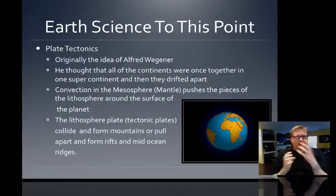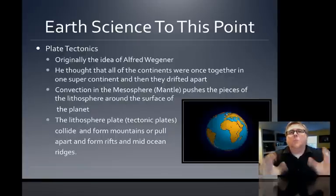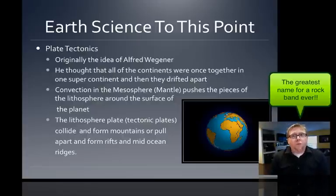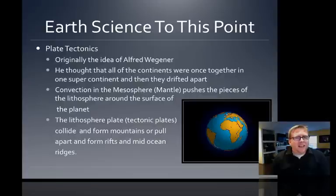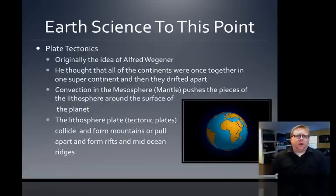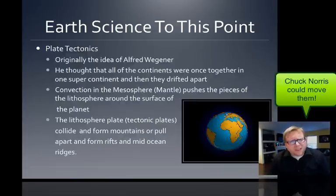Let's start with plate tectonics — in class I've always said this is the big item, what this class is really about. If I could rename it instead of earth science, it really would be plate tectonics. Plate tectonics originally came about as the idea of continental drift by Alfred Wegener — the guy who looked at all the continents and said they all fit together into one supercontinent, which we later called Pangaea. When he originally put his idea out there, people thought he was crazy.